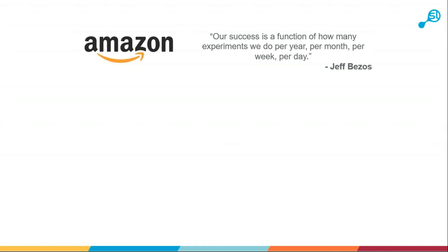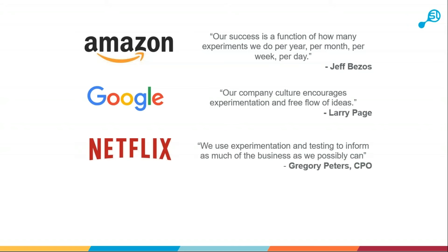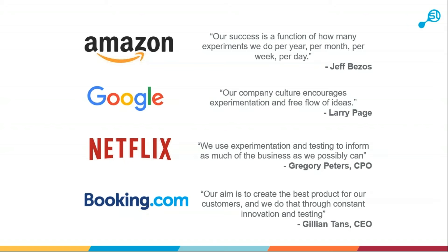Going through a few examples: Amazon have said their success is a function of how many experiments they do per year, per month, per week and per day. Google constantly runs experiments as part of their culture. Netflix uses experimentation and testing to inform as much of the business as possible. And even booking.com — their aim is to create the best product for their customers through constant innovation and testing.